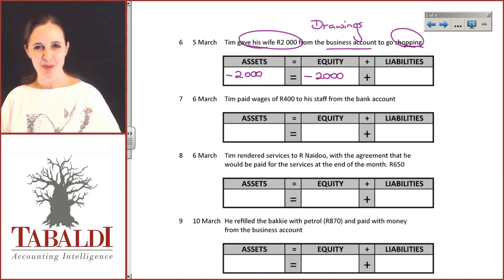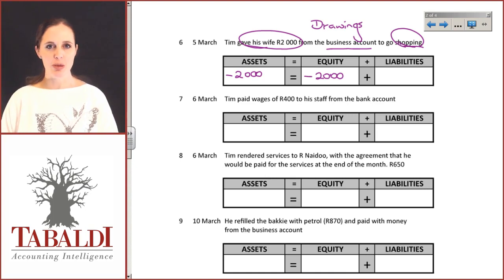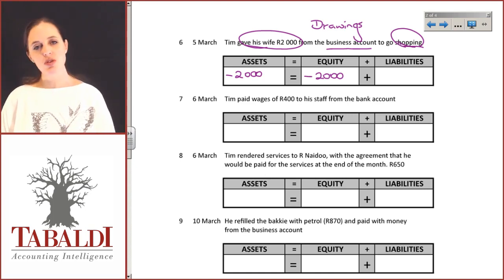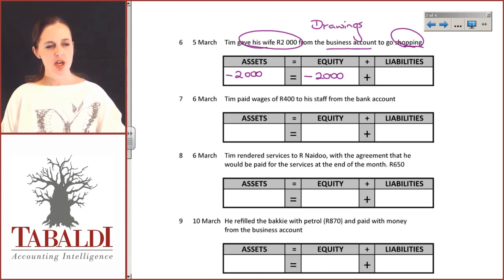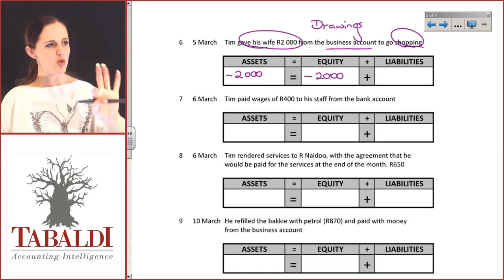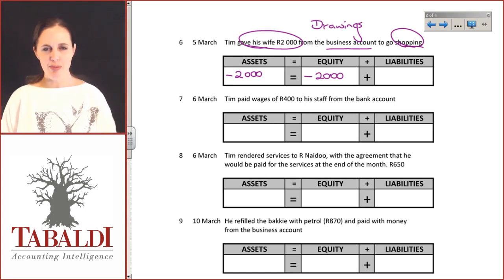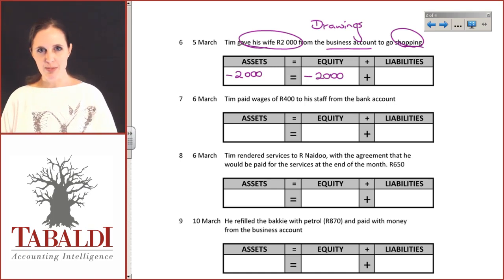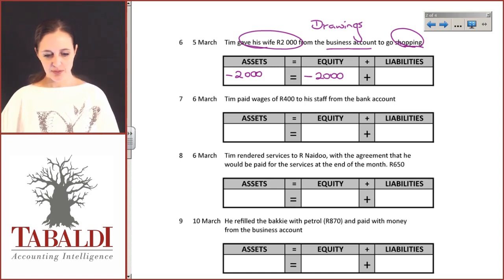We can't call whatever she's shopping for in her personal capacity a business expense, because it's not — it's their personal stuff. Always make sure when you're doing this that you draw a line between the owners in their personal capacity and what happens with the business.